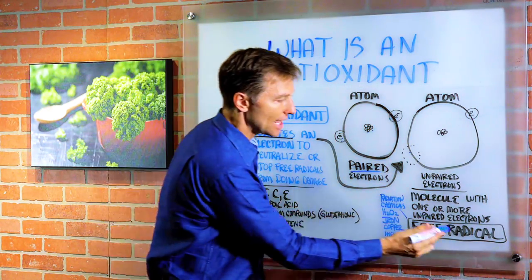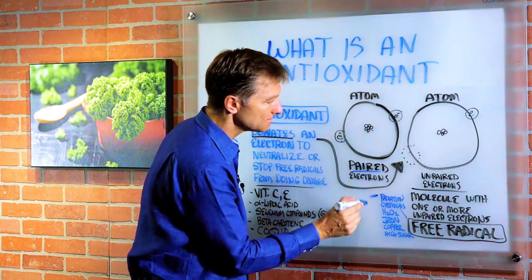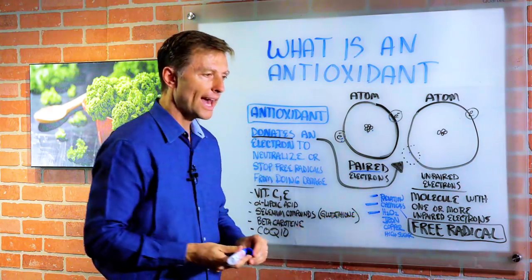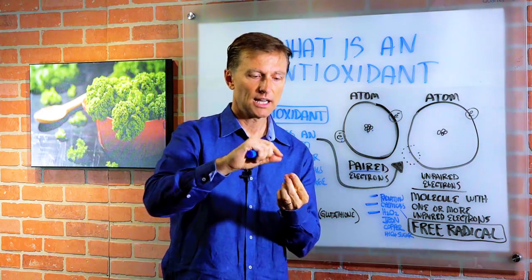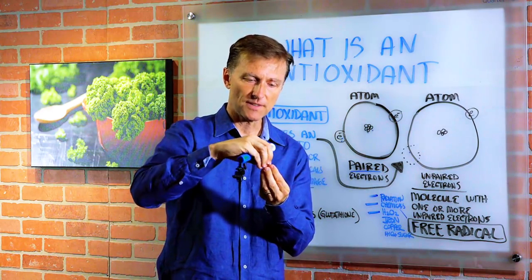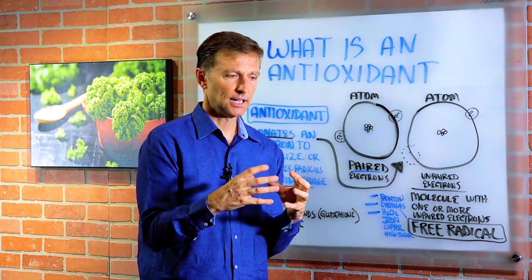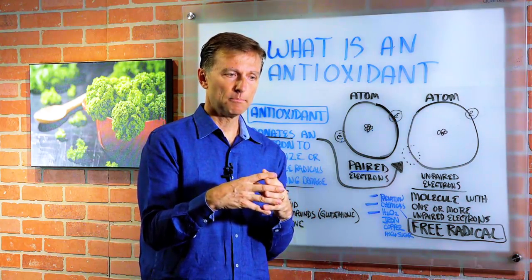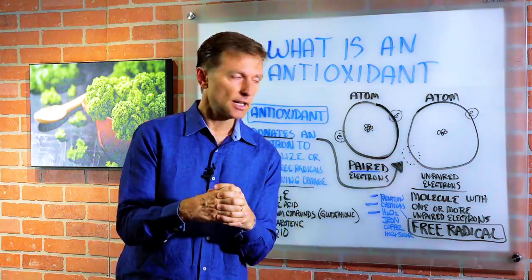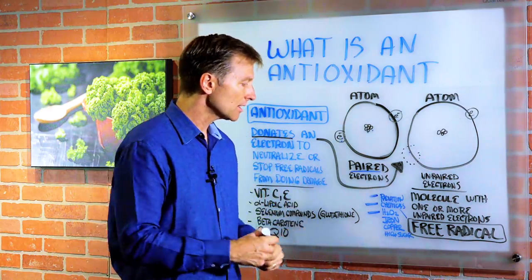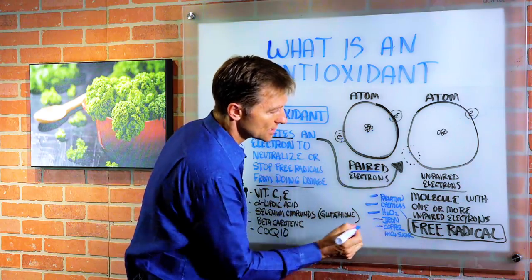An example of things that give off free radicals would be radiation, different chemicals, and hydrogen peroxide. If you have hydrogen peroxide in your house and poured it on an open wound to clean it, you can see it fizzes and starts to oxidize the tissue. We also have free iron or free copper — normally bound to protein in the body, but very dangerous when free. These are considered free radicals.